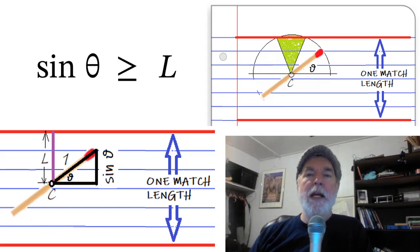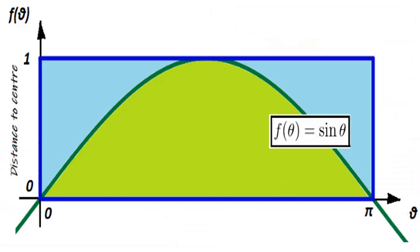Now here we've plotted L and sine theta as functions of theta. The distance L is independent of theta; it could be anywhere between zero and one. The plot of L being less than or equal to one forms the rectangle, and the sine theta curve—the area beneath that covers those situations where sine theta exceeds L. So those are the hits.